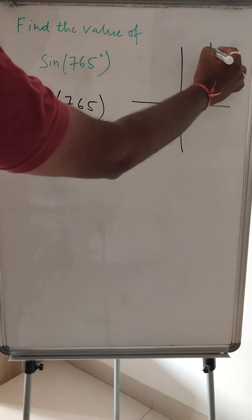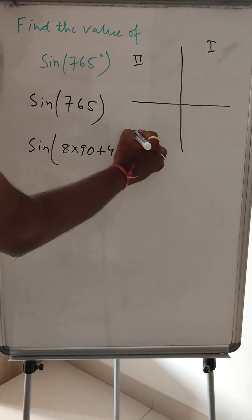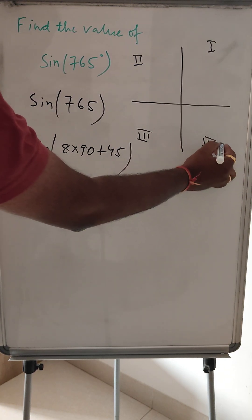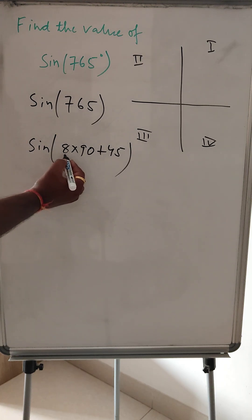This is the first quadrant, this is the second, this is the third quadrant, this is the fourth quadrant. And we should understand under which quadrant this value lies.